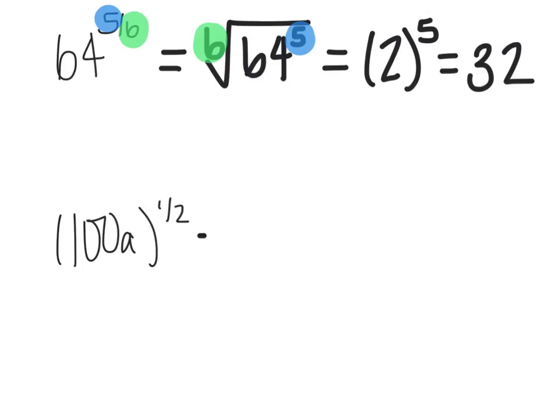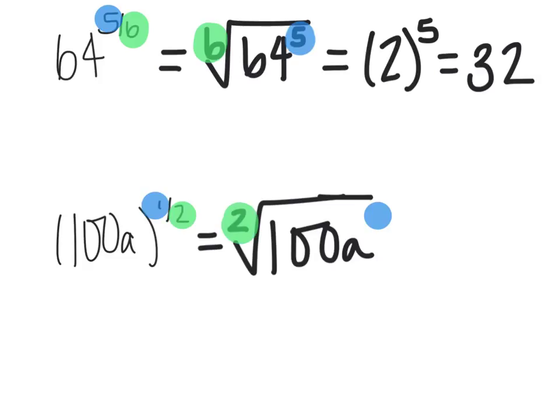And then lastly, I have the square root of 100a to the first power. Well, if I don't, in thinking about exponents, if I have an exponent of 1, I don't actually have to write that. And same thing if I have a square root, I don't technically have to put a 2 here. But remember that my denominator becomes my index and my numerator becomes my power, which I don't have to write if it's a 1. So I have the square root of 100a. Well, I can take the square root of 100, which is 10. I cannot take the square root of a, so it's going to be 10 square root of a.